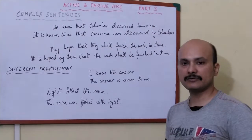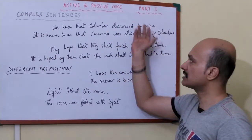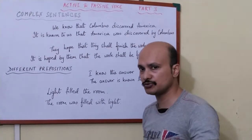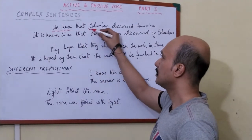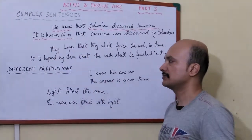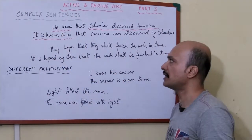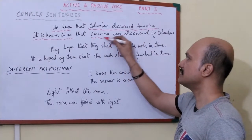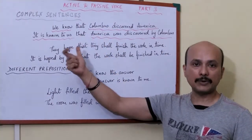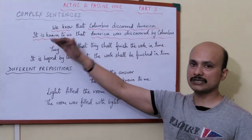See here: 'We know that Columbus discovered America.' There are two parts: 'we know' and after the clause word 'that' — 'Columbus discovered America'. Because there are two parts, we can change both separately. 'We know' becomes 'it is known to us'. Then we write the clause word 'that', and 'Columbus discovered America' becomes 'America was discovered by Columbus'.